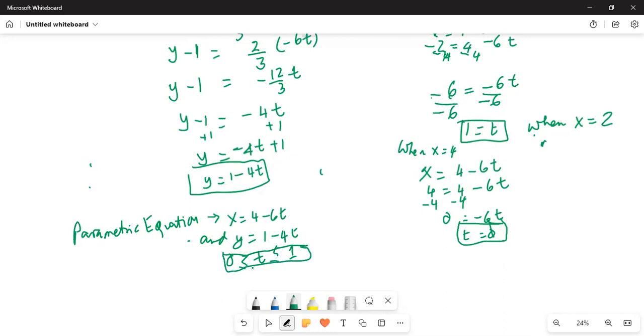This is the set of parametric equations for this line segment between those two points, (4, 1) and (-2, -3).